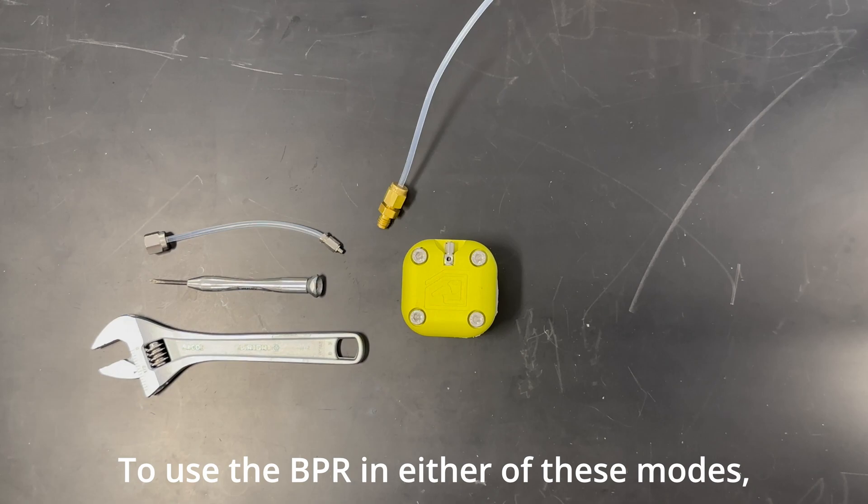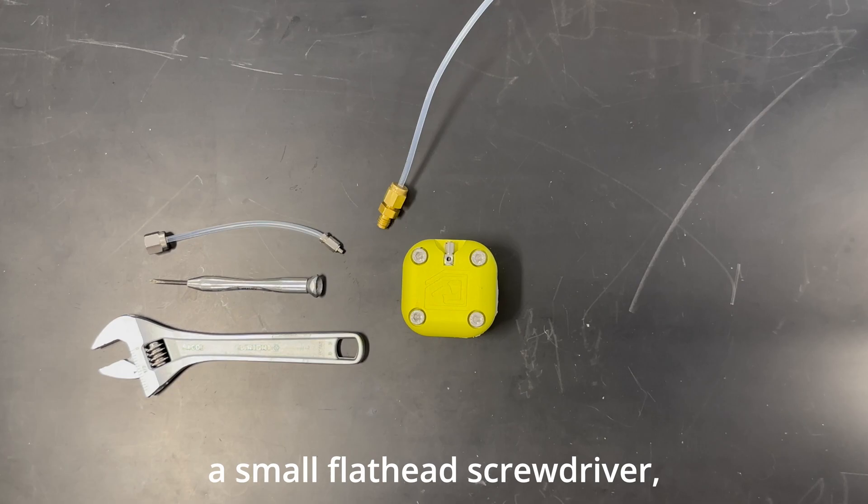To use the BPR in either of these modes, it will require a small adjustable wrench, a small flathead screwdriver, a BPR connect tube, and a gas source.